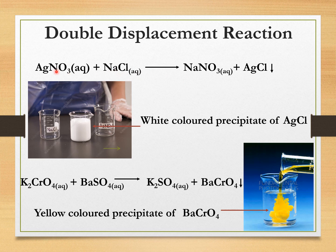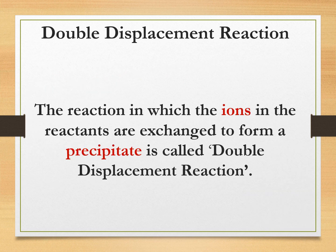So, exchange of ions has taken place. The reaction in which ions in the reactants are exchanged to form a precipitate is called a double displacement reaction.